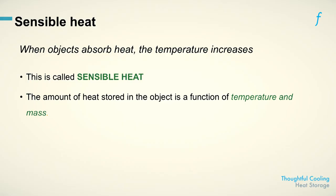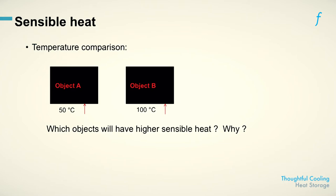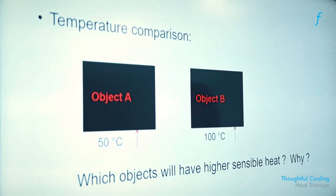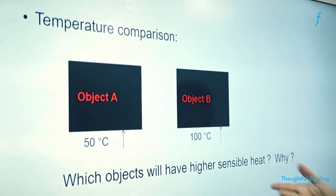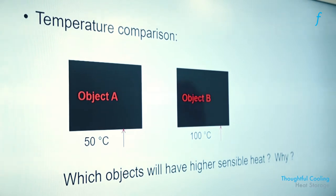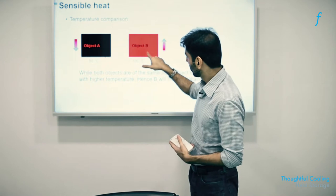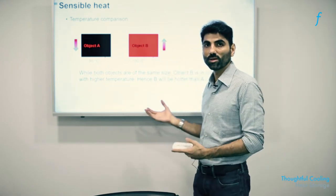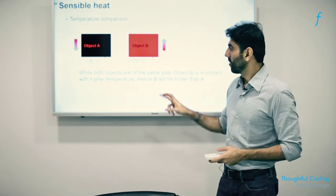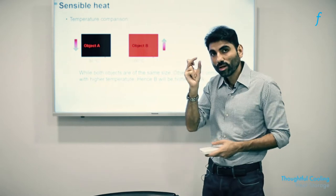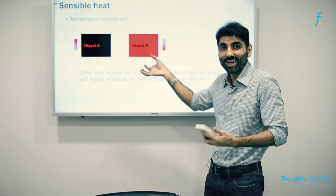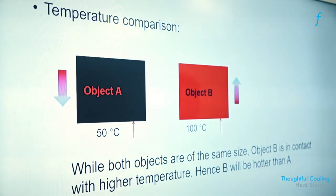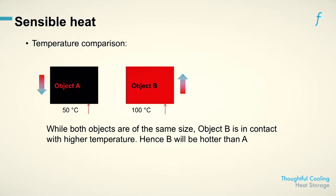Here is a quiz. There are two objects — object A and object B — both the same size and the same mass, say 10 kg each. This one is kept at a lower temperature than the other. Which object will have higher sensible heat and why? The answer is object B has higher total sensible heat, because even though they have the same amount of substance, its molecules are vibrating at a higher frequency. Hence object B, even though it has the same mass, has a higher total sensible heat.